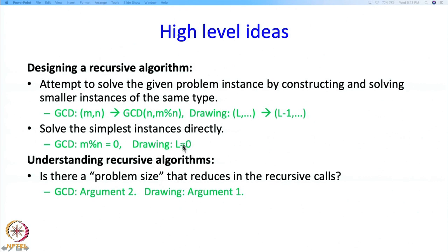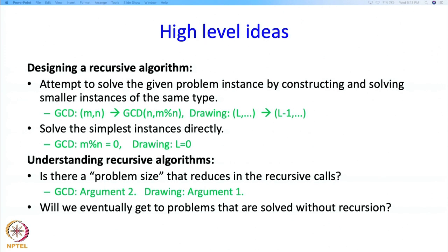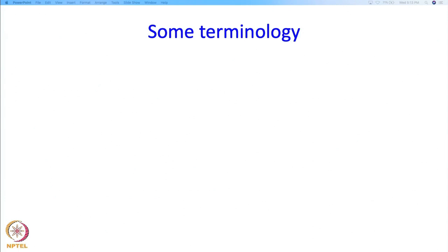For drawing, the problem size is the very first argument L — we said a tree with L levels can be drawn by drawing several trees with L-1 levels. So the second and first arguments respectively can be thought of as the problem size. If given a recursive algorithm, you should look for something that is reducing as you do the recursion, and then ask: will we eventually reach problems that are solved without recursion?